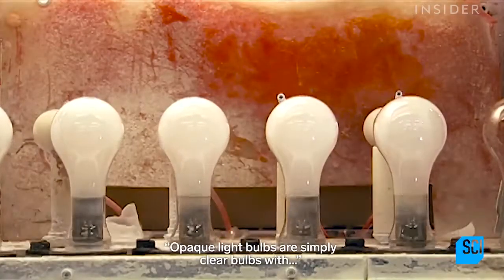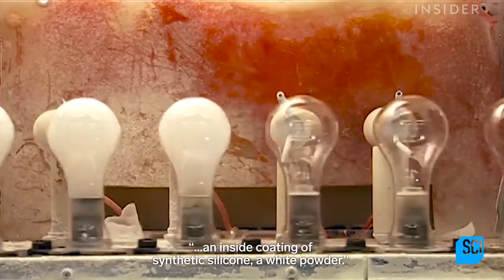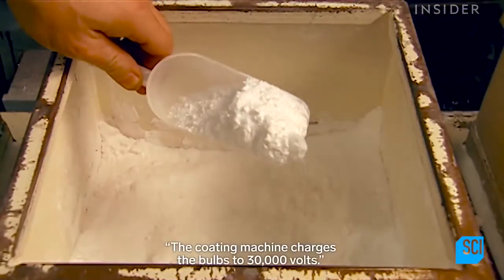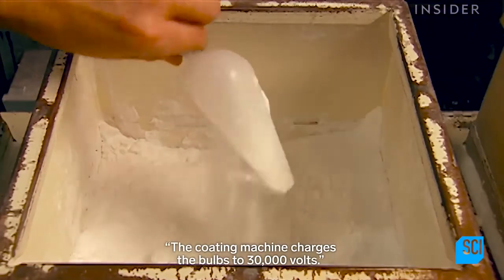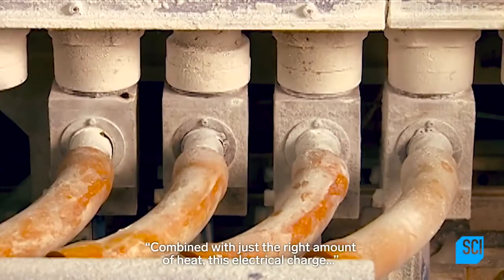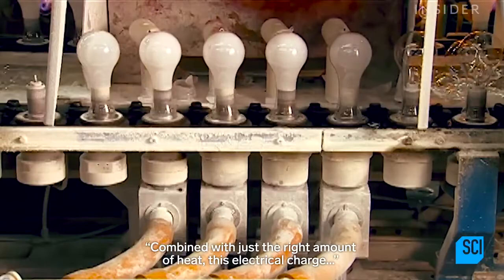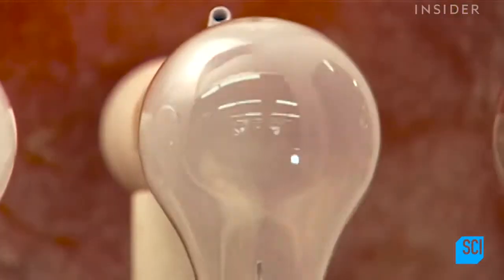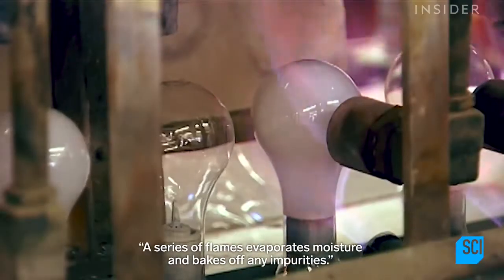Opaque light bulbs are simply clear bulbs with an inside coating of synthetic silica, a white powder. The coating machine charges the bulbs to 30,000 volts. Combined with just the right amount of heat, this electrical charge makes a thin layer of powder cling to the glass. A series of flames evaporates moisture and bakes off any impurities.